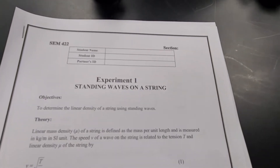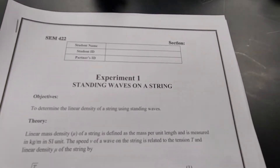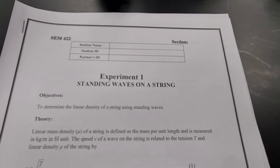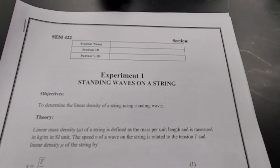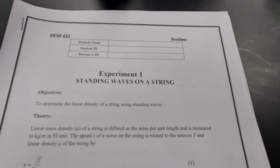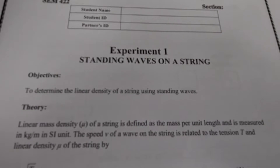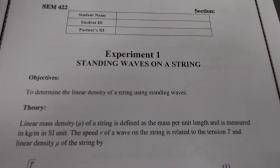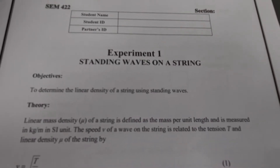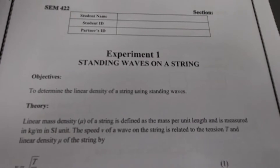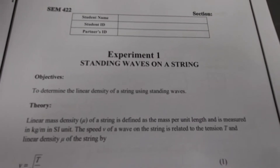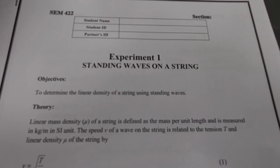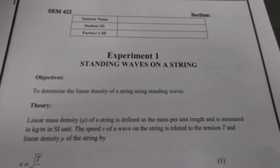Today I am going to explain the first experiment of physics 2: standing waves on a string. Our objective is to find the linear density of a string using standing waves. We are going to produce standing waves in the string and with the help of that we are going to calculate the linear density.